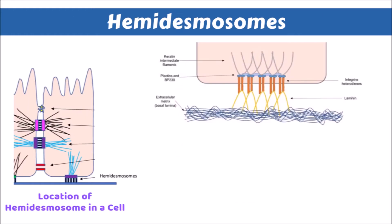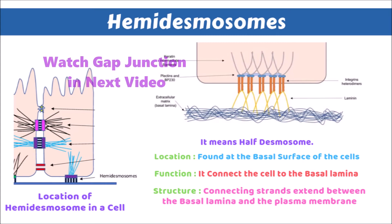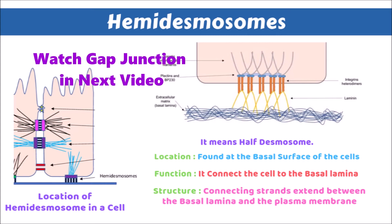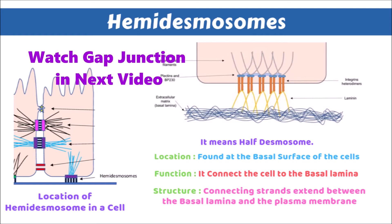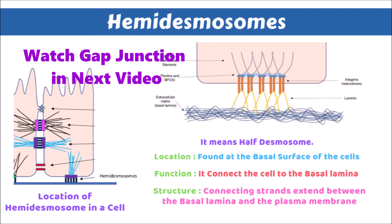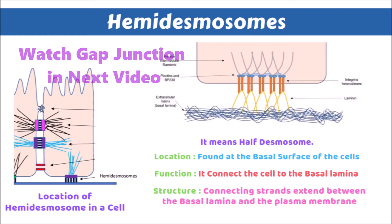Now, the hemidesmosomes. These literally means the half desmosomes. These are giving the fibers towards the basal lamina of the basement membrane. Location is found at the basal surface of the cells. Function is to connect the cell to the basal lamina and in the structure we can say that connecting strands extend between the basal lamina and the plasma membrane. This is hemidesmosomes.